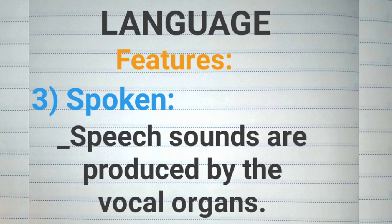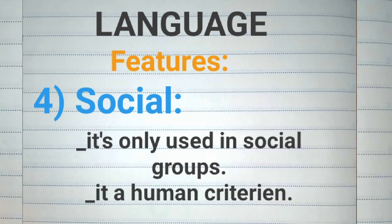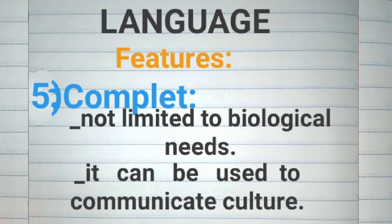Number three, it is vocal — language is always spoken. People communicate ideas by manipulating sounds that are produced by their vocal organs. Number four, it is social — it is only used in social groups which involve at least two people: the speaker and the hearer. Only human beings speak language.